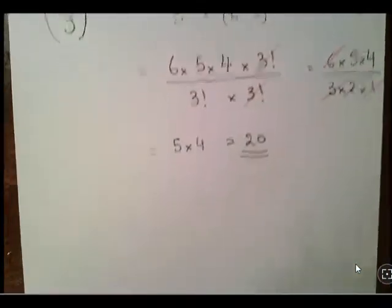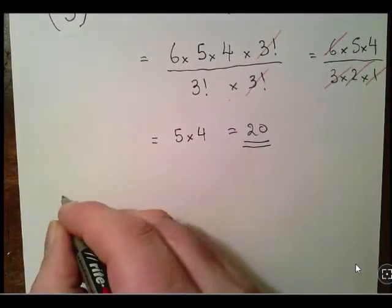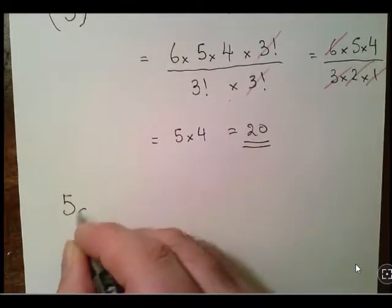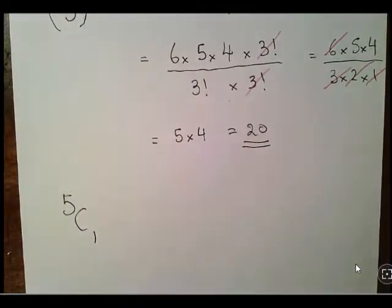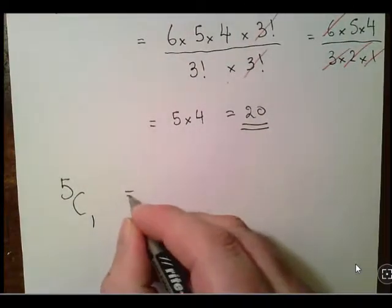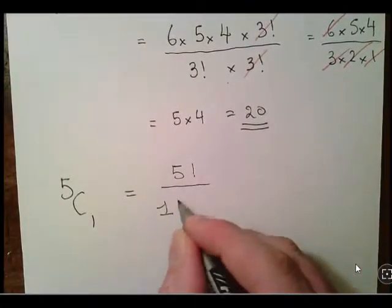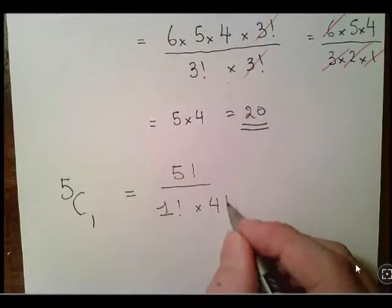Let's do another one here. Let's go 5 choose 1, and again I'm deliberately alternating notation. That is equal to 5 factorial over 1 factorial times 4 factorial.